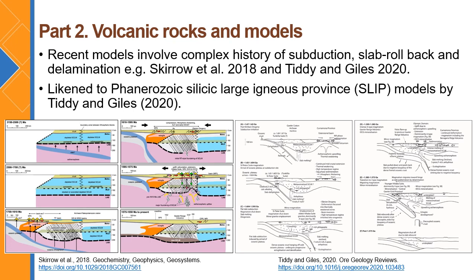Some recent models for the formation of the Gawler Range Volcanics and Hildibus Suite involve a complex history of subductions, slab rollback, and delamination. Here we have two recent models proposed by Scyro et al. and Tidion & Giles. The two panels on the left are the models of Scyro, which include ancient processes dating back to the Archaean, including complex subduction, rollback, and delamination. The panels on the right show the model of Tidion & Giles, which use an analogy to Phanerozoic silicic large igneous provinces, suggesting that the metasomatism responsible for the subcontinental lithospheric mantle was a recent process.